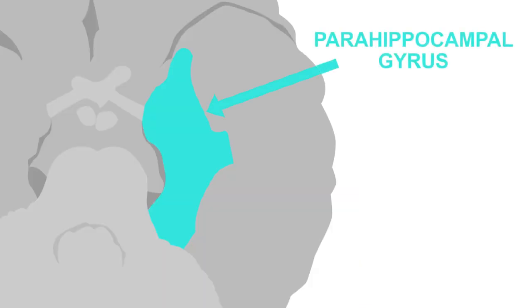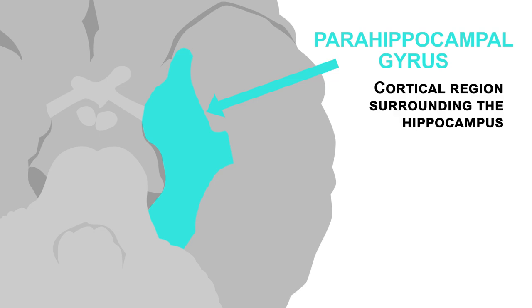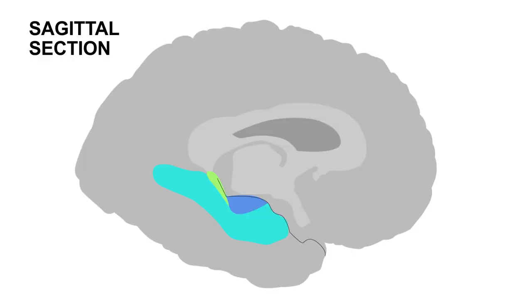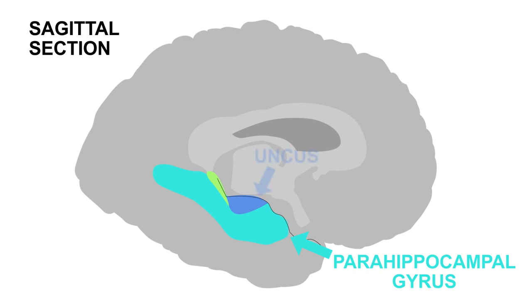From the underside of the brain, you can see the parahippocampal gyrus. This is a cortical region surrounding the hippocampus. If we examine one cerebral hemisphere in a sagittal section, we can again observe the parahippocampal gyrus. Note the uncus in dark blue, as well as the dentate gyrus in green.